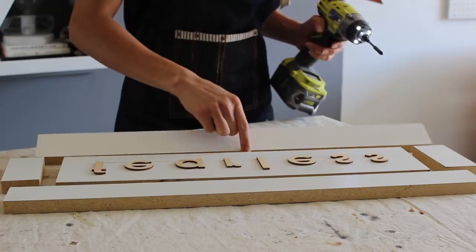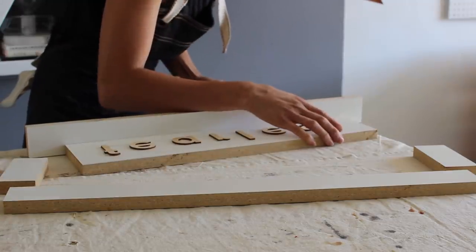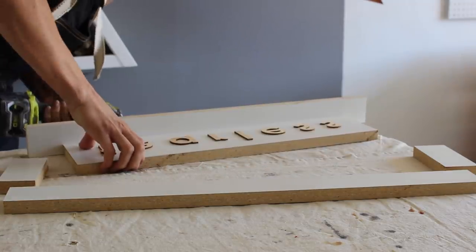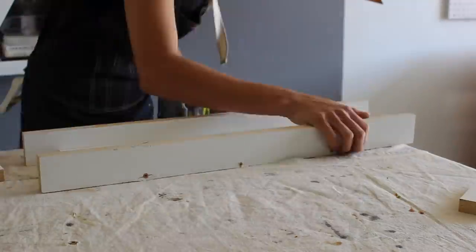I screwed together the mold and then opted out of the silicone step just because I wasn't feeling like I had the time or the patience and poured the Quikrete right in.